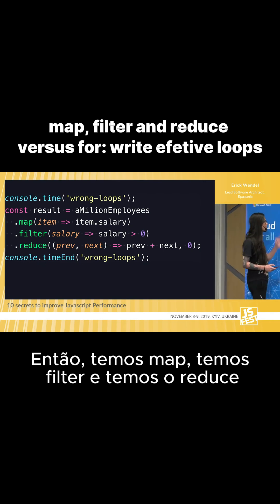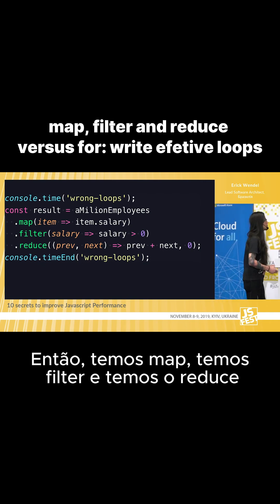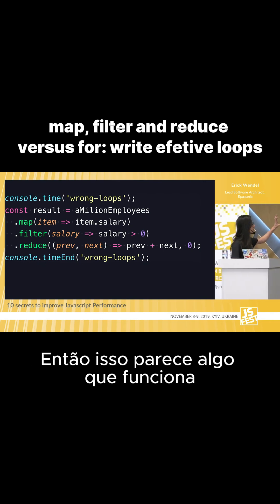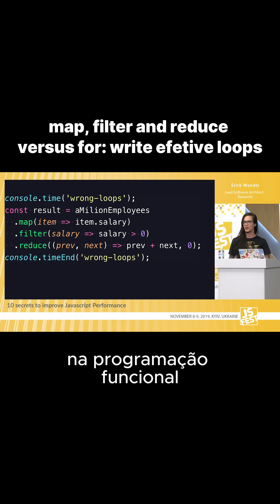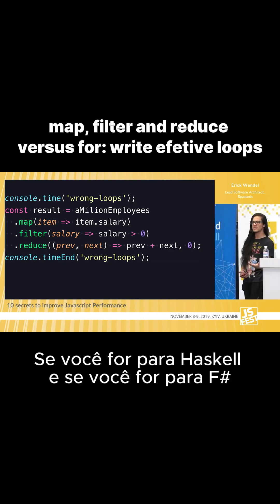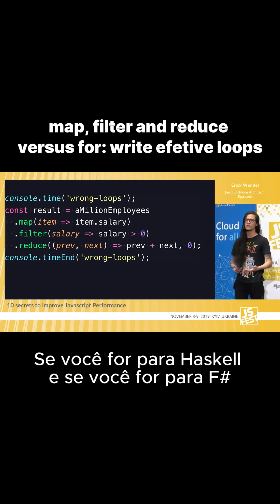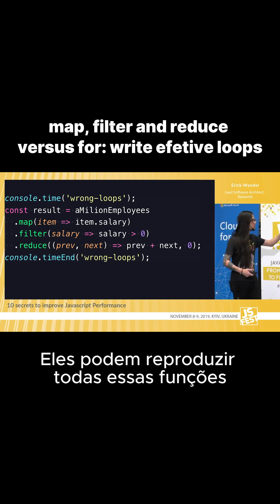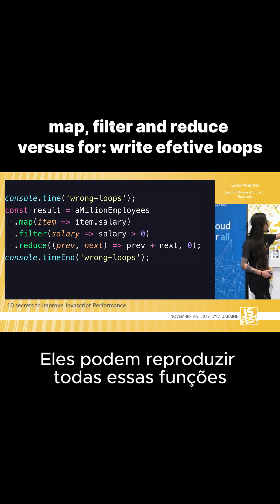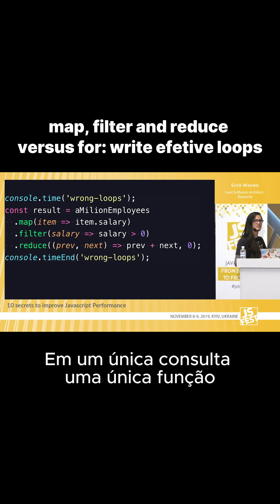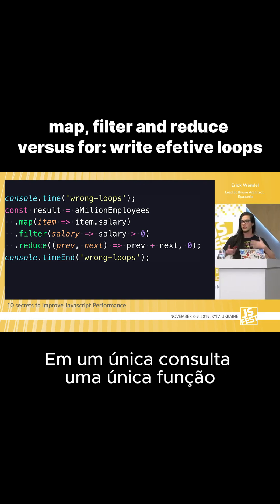So we have map, we have filter, and we have reduce. This looks like something that works in functional programming. If you go to Haskell and if you go to F#, they can reproduce all of these functions in one single query, one single function.